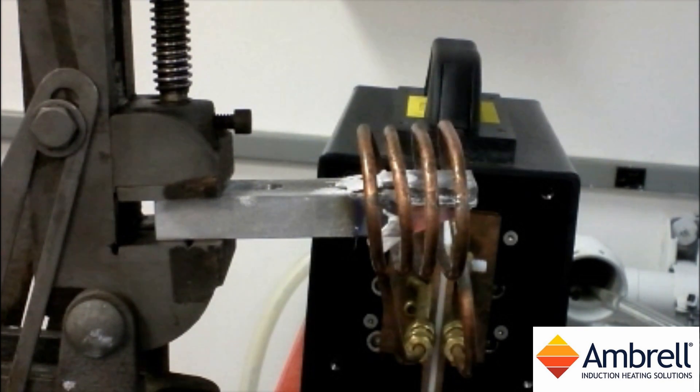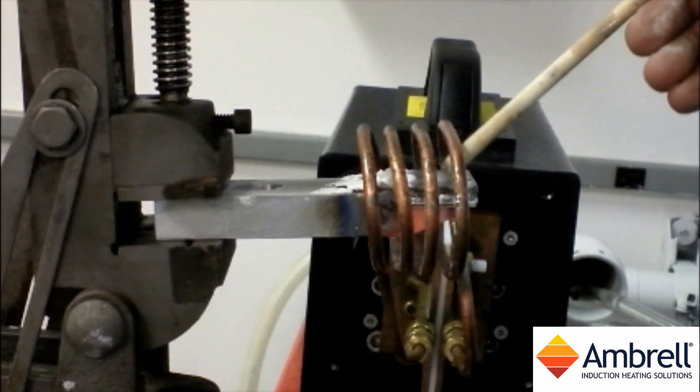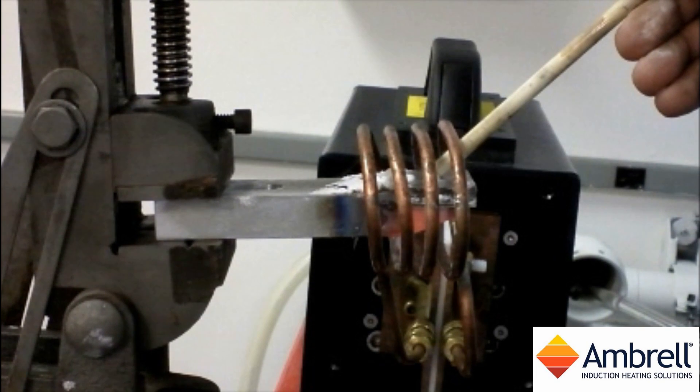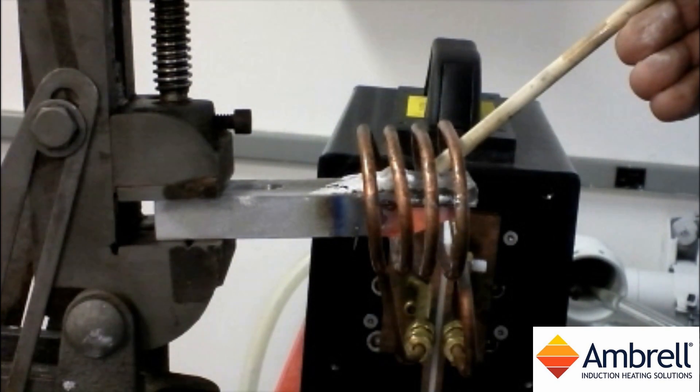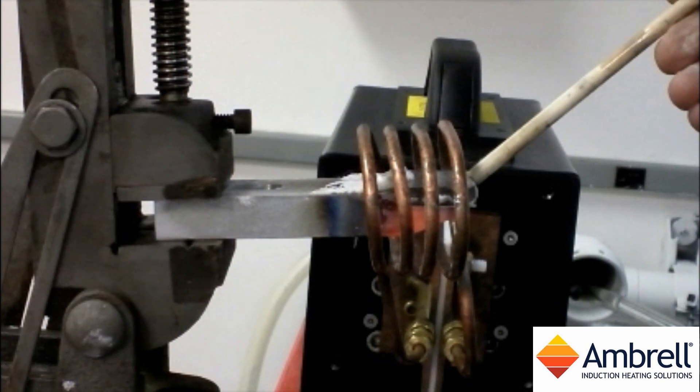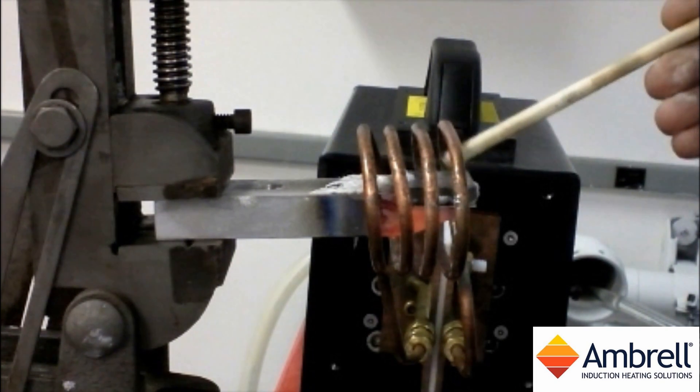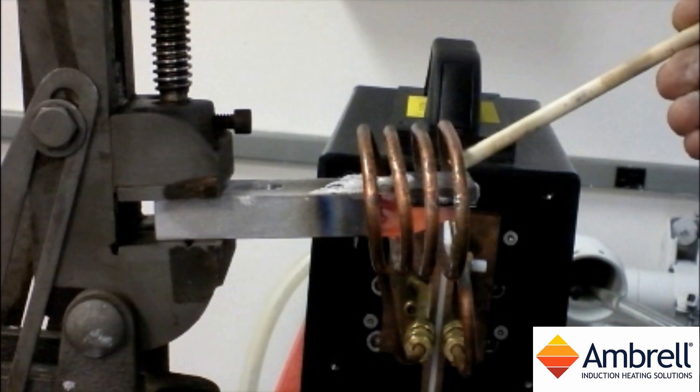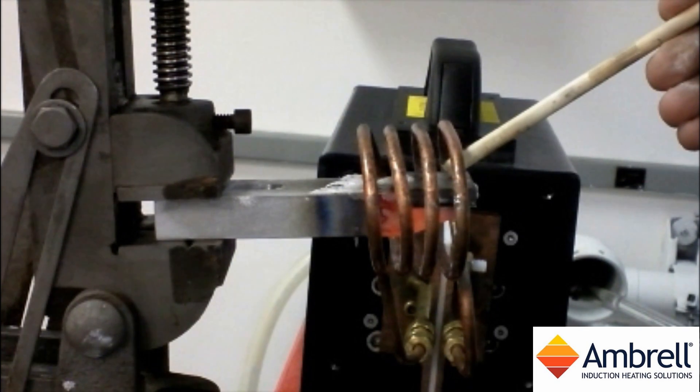Now you can see that the flux is beginning to liquefy. If you take a look at the carbide, you can see that it's beginning to get a dull red glow to it. The heating time for this application is approximately 60 seconds.